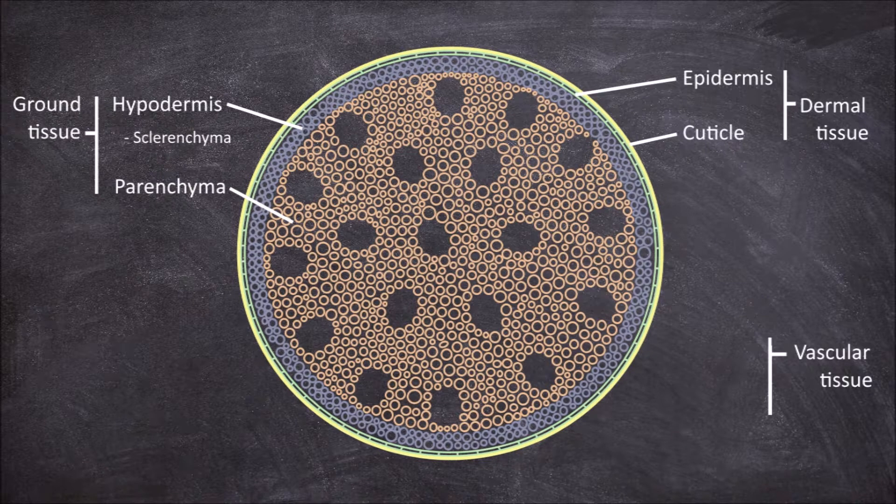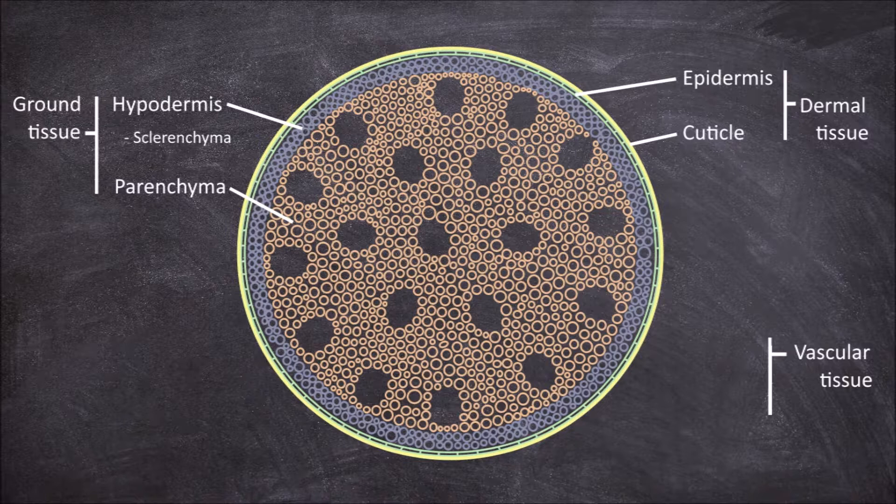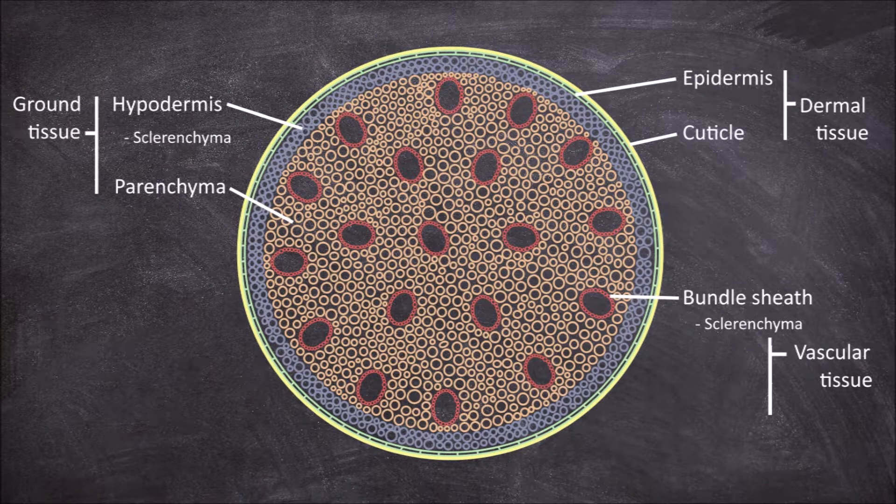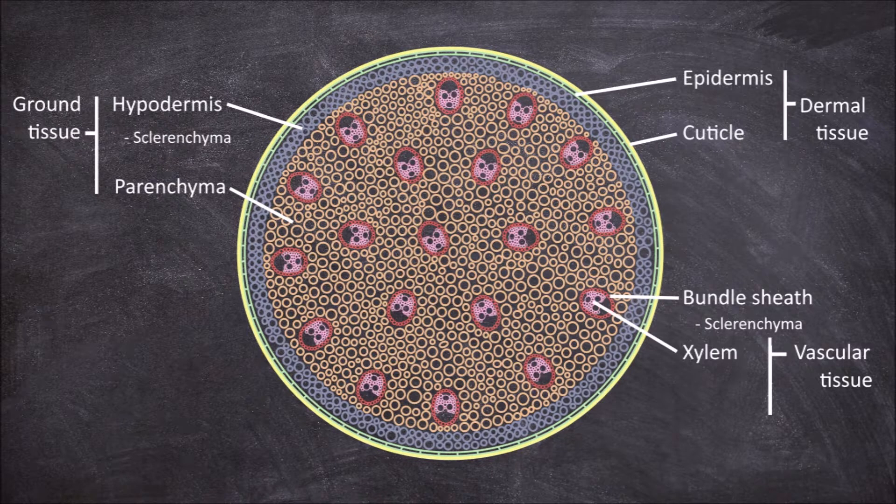The vascular tissue consists of the vascular bundles that are found scattered in the ground tissue as opposed to arranged in a ring as seen in dicot stems. The vascular bundles are enclosed in a bundle sheath made of sclerenchyma cells and consists of the xylem and the phloem.